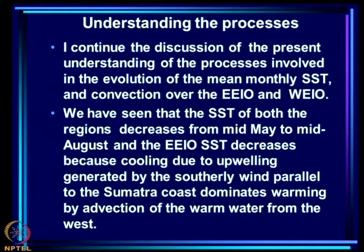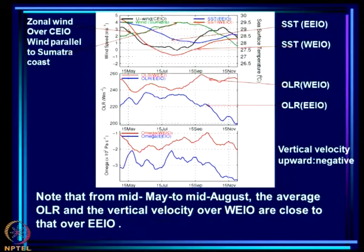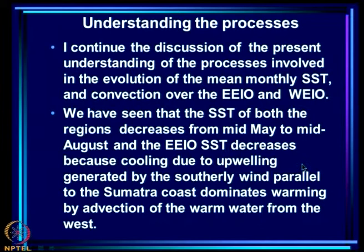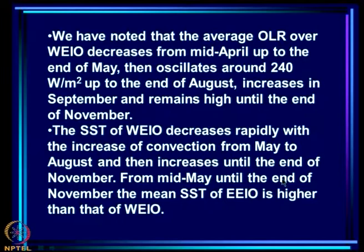We have seen that the SST of both the regions decreases from mid-May to mid-August. The SST of both regions — blue is EEIO and red is WEIO — starts decreasing from mid-May right up to mid-August or so, and then both start increasing after mid-September. The average OLR over WEIO decreases from mid-April up to end of May and then oscillates around 240 watts per meter square up to the end of August.